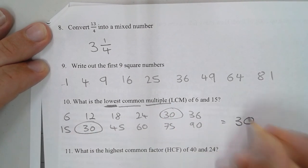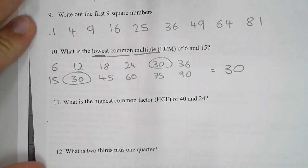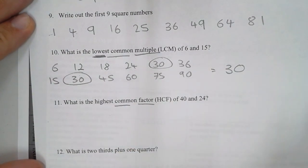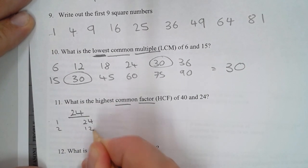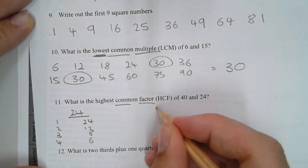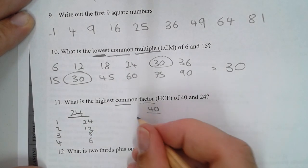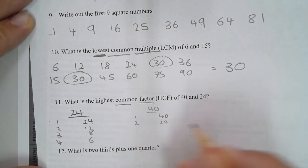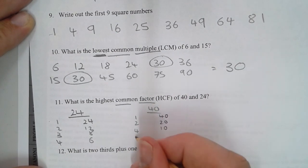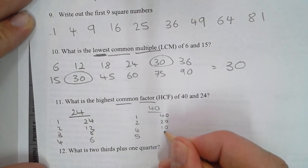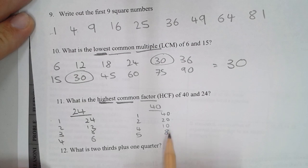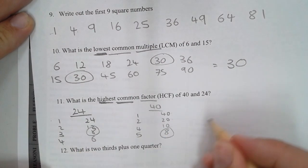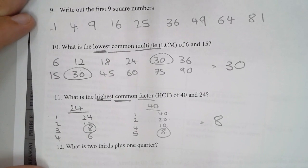Number 11: what's the highest common factor? Let's write out the factors of 24 and the factors of 40. That's 1 and 40, 2 and 20, 4 and 10, 5 and 8. Highest common factor is the biggest number in both lists: no 40, no 24, no 10... 8. So our answer is 8.